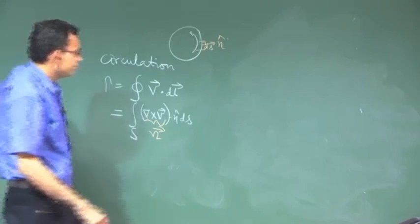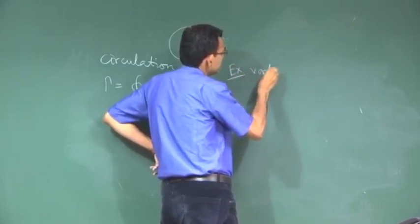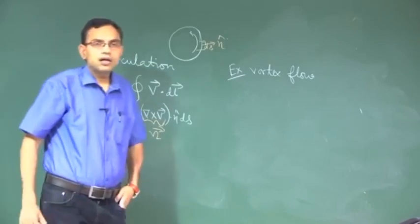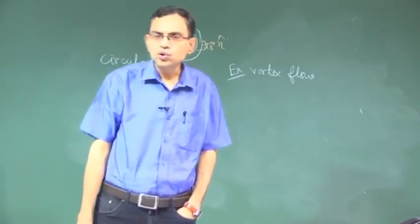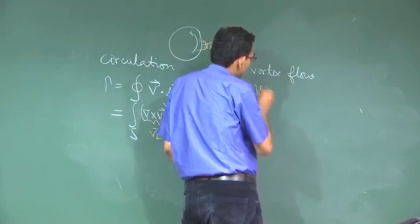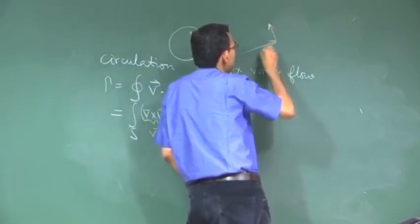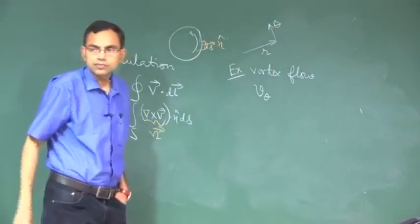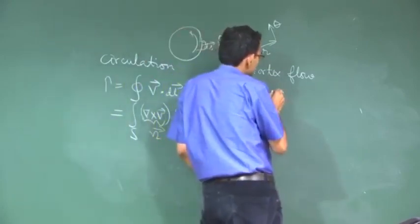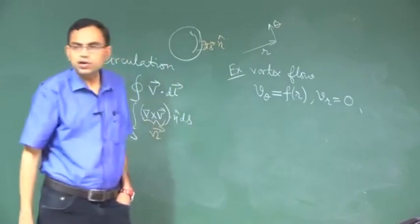Let us calculate the circulation for a particular type of flow which we call vortex flow. Vortex flow is a type of flow where you have v theta in a polar coordinate system with direction r and direction theta. V theta is the velocity in the tangential direction, v theta is a function of r, and v r is equal to zero. This kind of flow is called vortex flow.